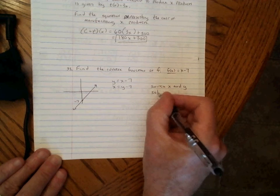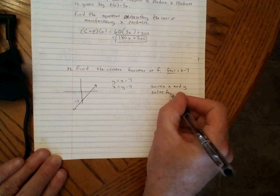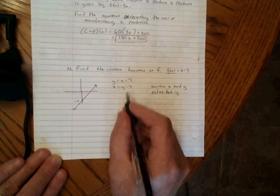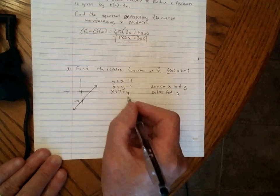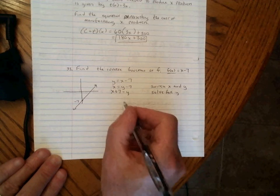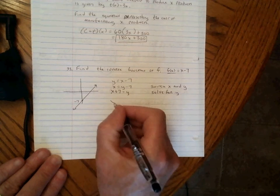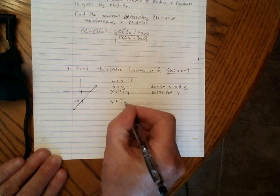Next, we solve for the new Y. We're going to add 7 to both sides and get X plus 7 equals Y. Now we'll replace the Y back with F inverse of X this time. So this is X plus 7.